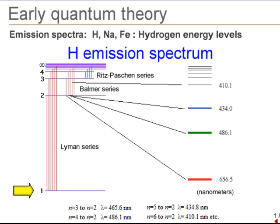For the Lyman series, the electrons end up in the lowest ground state. For the Balmer series, they all end up in the second state. And for the Ritz-Paschen series, all the emitted electrons end up in the third state.